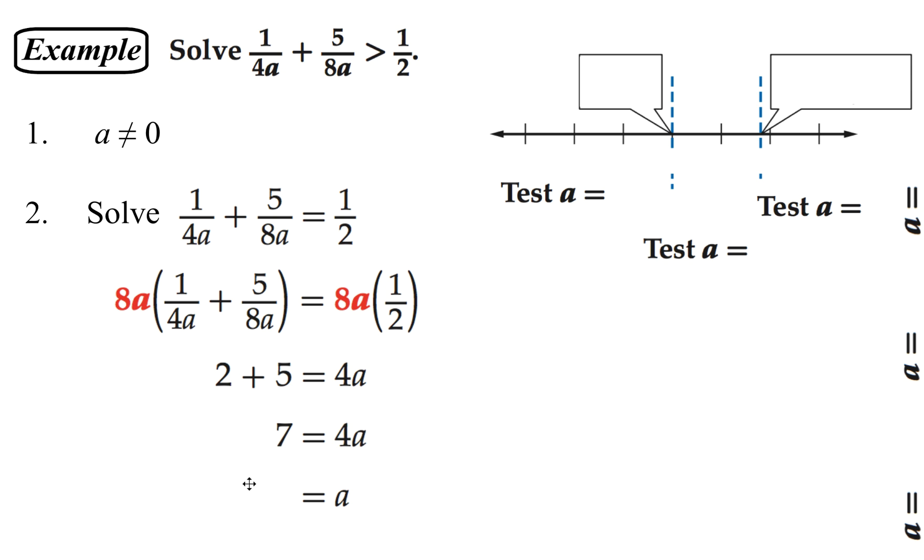So we have 4A is equal to 7, or A equals 7 fourths, which is 1 and 3 fourths. So now that we have our value for A, this is the only value we get. It wasn't 0, so it's not excluded.